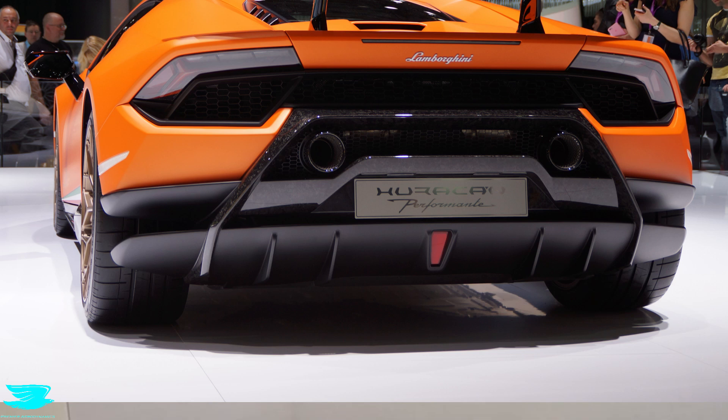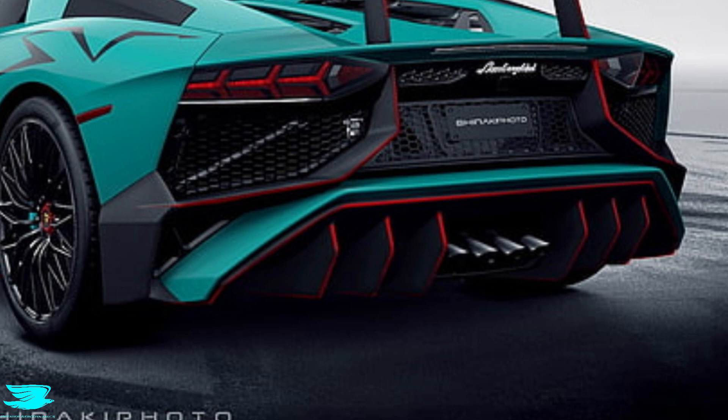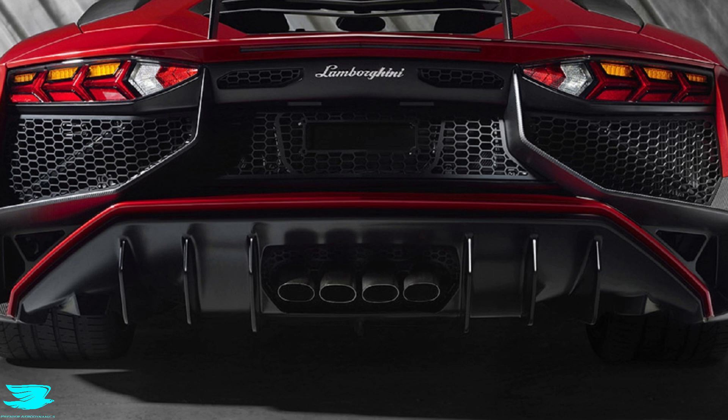So you may have noticed on a lot of cars these days, you get these little vanes at the back, these strikes that come down on the diffuser. And it's almost to the point where high performance cars these days pretty much have them mandatory. So what do they do? And why are they there?